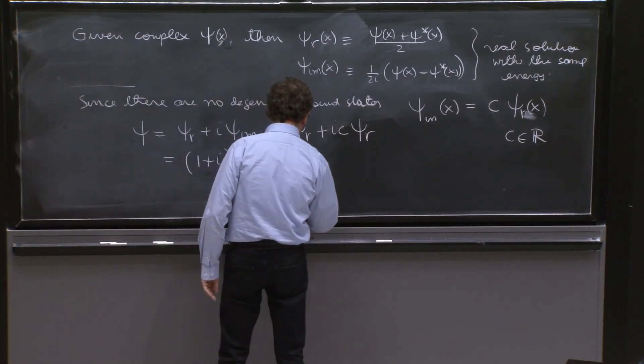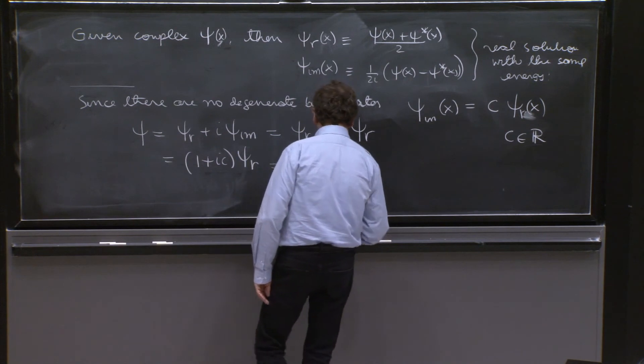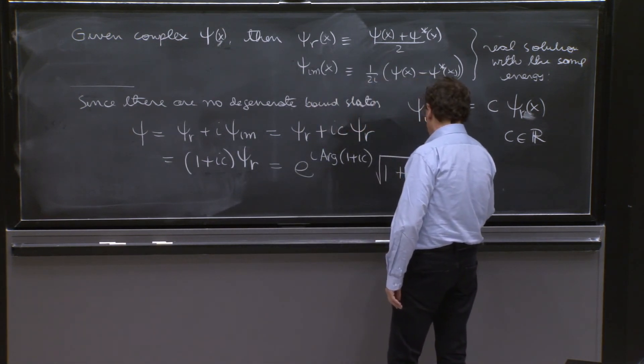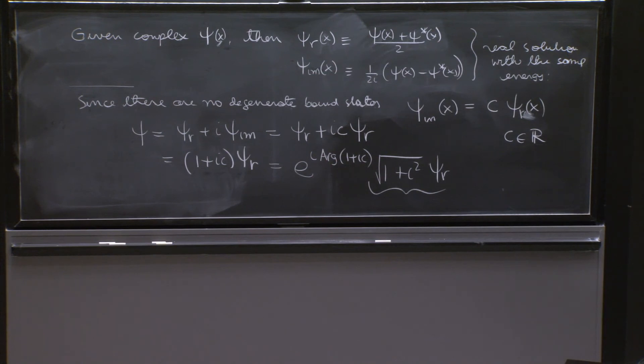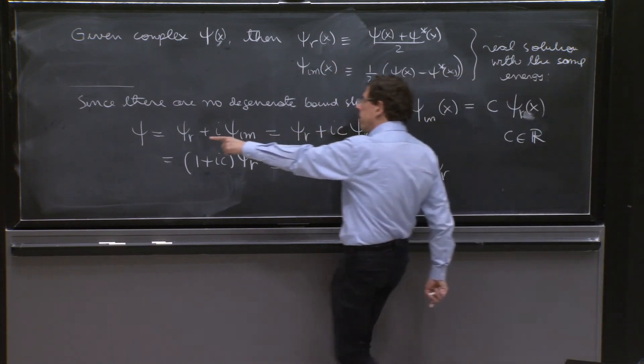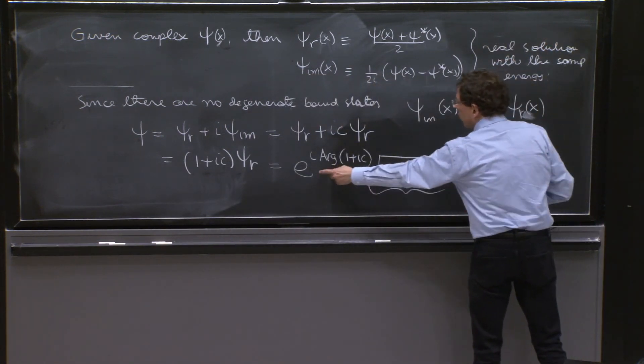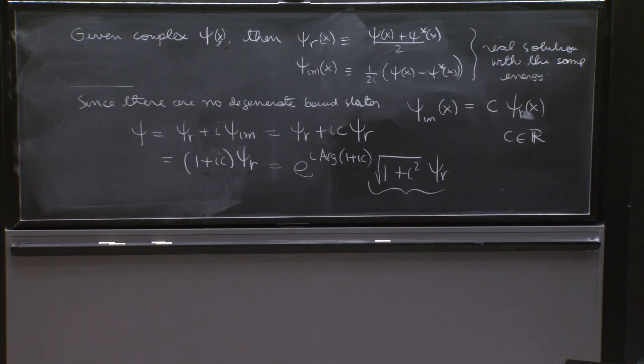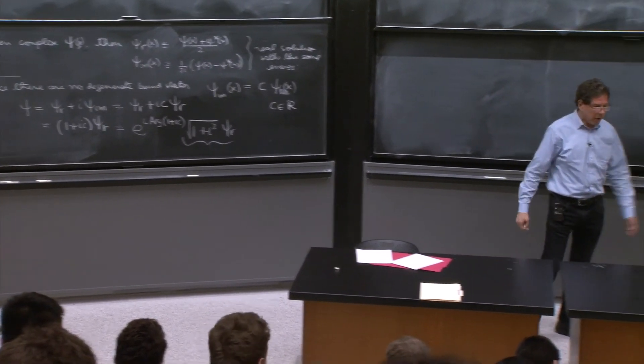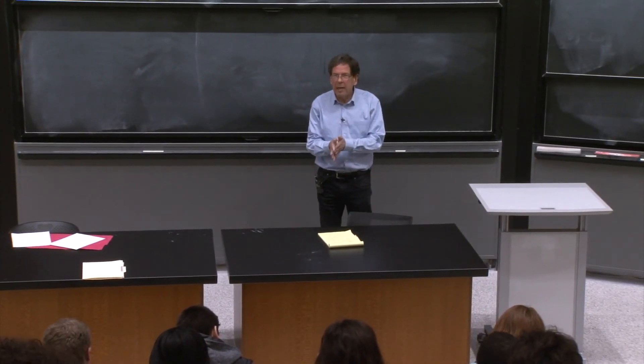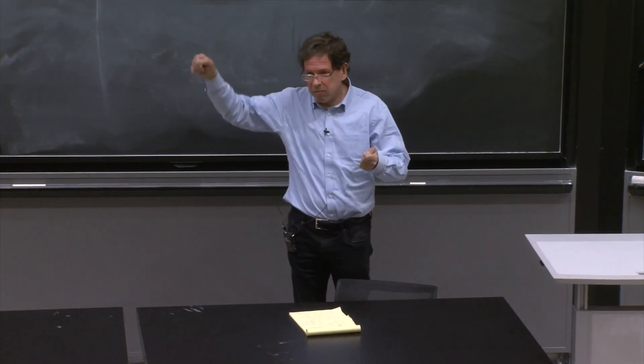That is basically the content of the theorem. Any solution is, up to a number, just a real solution. So you're not going to find a real solution that has non-trivial, different real and imaginary parts here. No, it's just a real solution and a complex number. If you want, you can write this as e^(i·arg(1+ic)) times sqrt(1 + c²) psi_r. Then it's literally the way it's said here: the wave function is proportional to a real wave function up to a phase. So that's a very neat situation.